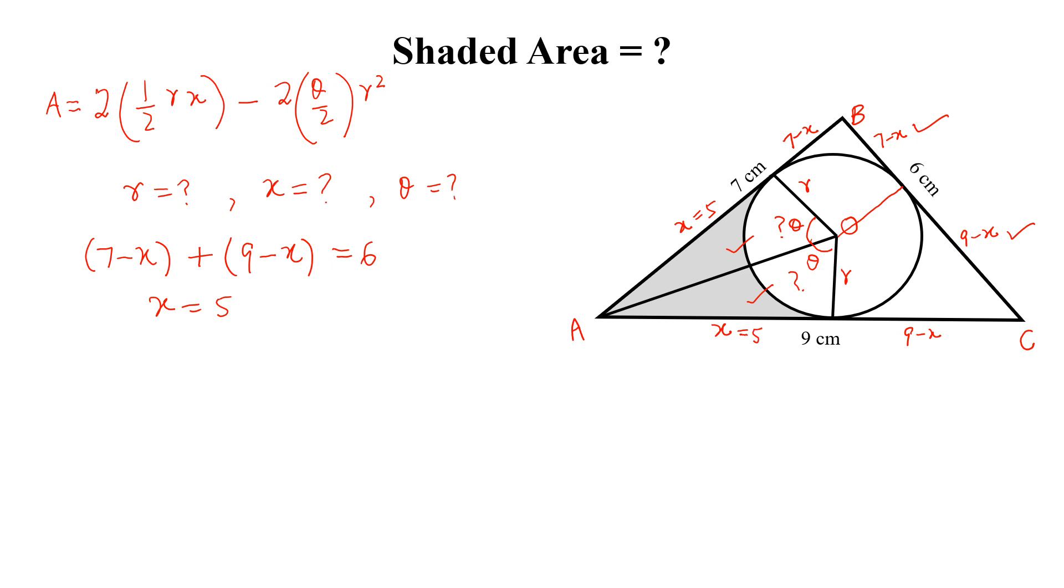Now, we will calculate R. We know that S is equal to 9 plus 7 plus 6 divided by 2 and from here we get S equal to 11. We also know that the inradius of this circle equal to S minus 9, S minus 7 into S minus 6 divided by S. If we put all the values here, we will get R equal to square root of 40 by 11.